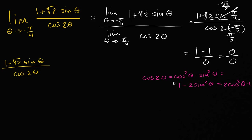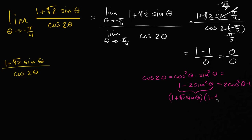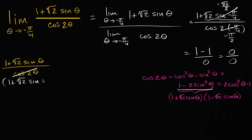All three of those forms are differences of squares, so we can factor them in interesting ways. Our goal is to cancel out what's causing the zero over zero. If I could factor cosine of two theta into something involving one plus square root of two sine theta, I'd be in business. Indeed, one minus two sine squared theta factors as one plus square root of two sine theta times one minus square root of two sine theta — a difference of squares with a plus b times a minus b.